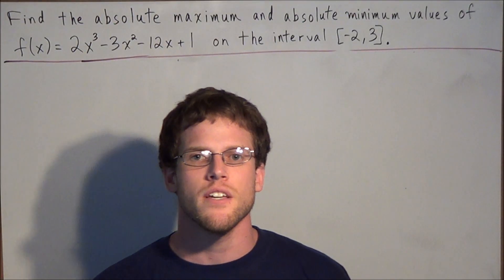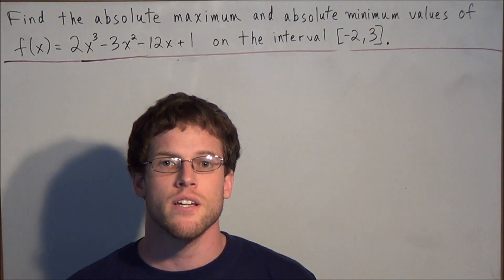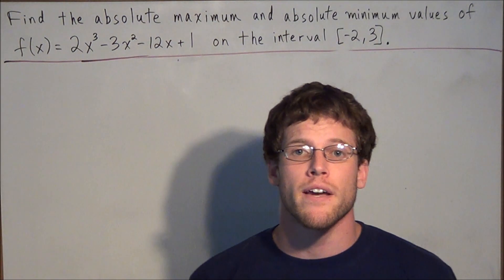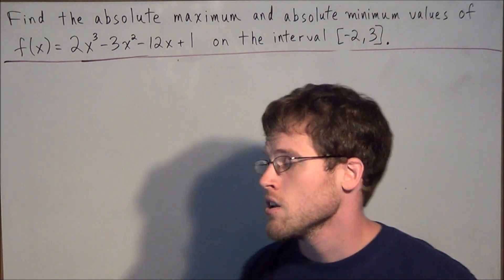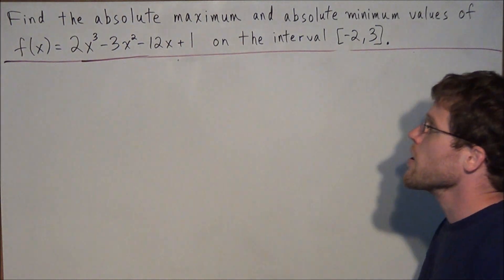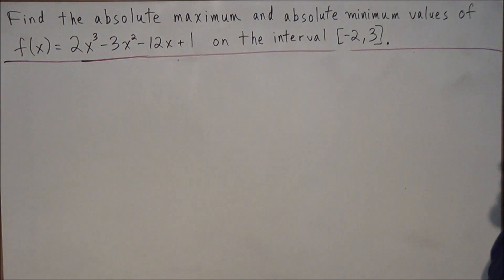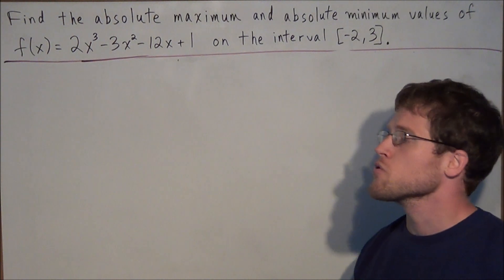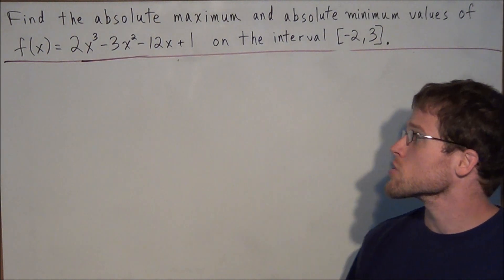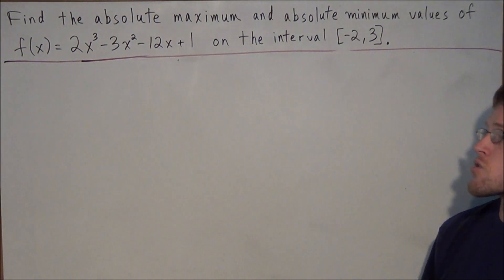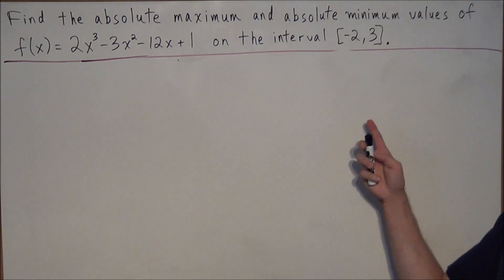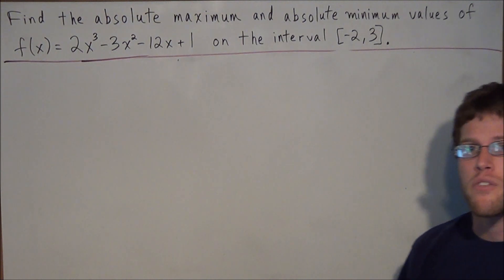Hi, my name is Mr. D, and today I want to take a look at finding absolute maximum and minimum values of a function. We have: find the absolute maximum and absolute minimum values of f(x) = 2x³ − 3x² − 12x + 1 on the interval from negative 2 to 3.